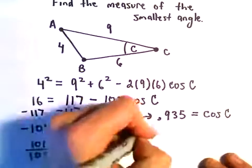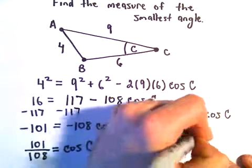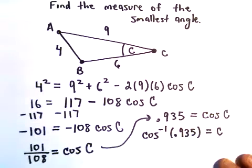And now if we just take the inverse cosine of both sides, that's going to give us our angle C.